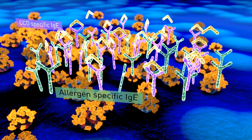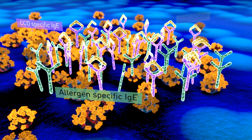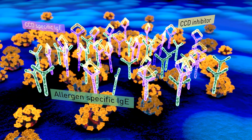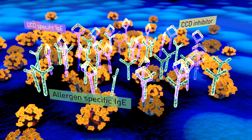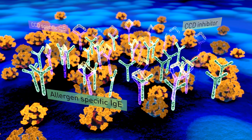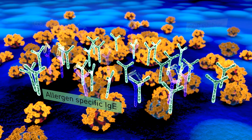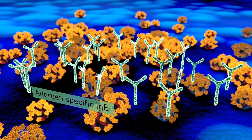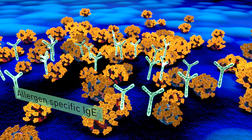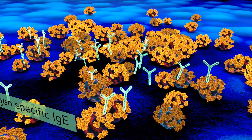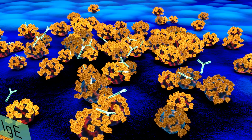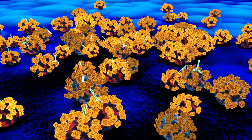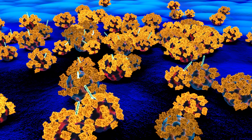To address this issue, Macroarray Diagnostics provides a CCD inhibitor with every Allergy Explorer test kit. Before the Allergy Explorer is performed, the inhibitor will block CCD-specific antibodies, and only the protein-specific IgEs that remain in the patient's serum will be detected. This results in the measurement of only allergen-specific antibodies, which facilitates the interpretation of your patient's test results.